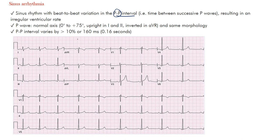We're assuming sinus rhythm is present. Go back to the sinus rhythm lecture to understand how we differentiate it. The main things you're looking for are a normal P wave axis — between zero and positive 75 degrees — with upright P waves in leads I and II, inverted in aVR, upright in the lateral leads, and upright in the inferior leads.